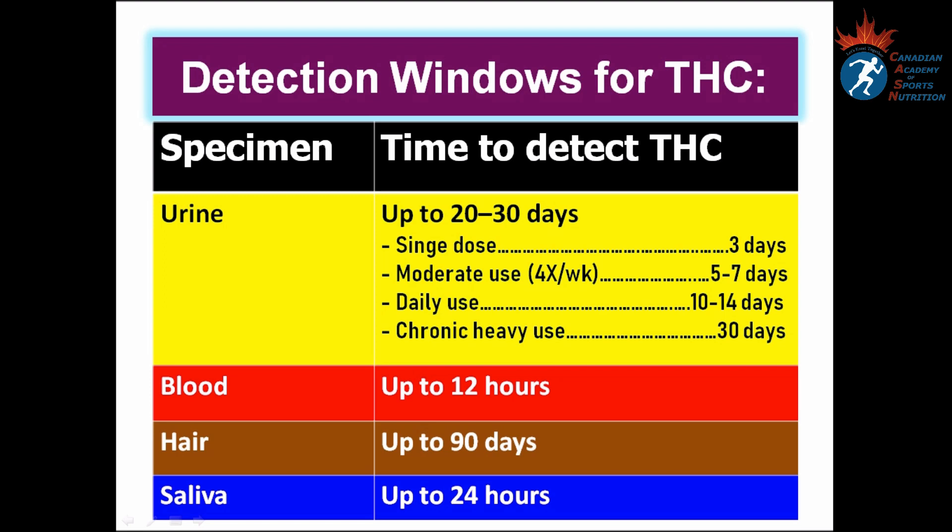This slide shows detection windows for THC. In urine, THC can be detected for up to 20 to 30 days: single dose — three days; moderate dose four times per week — five to seven days; daily use — 10 to 14 days; and chronic heavy use — 30 days. In blood, up to 12 hours. In hair, up to three months. And in saliva, up to 24 hours.